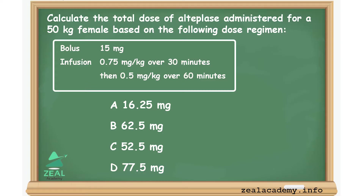A dose refers to a specified amount of medication taken at one time. By contrast, the dosage is the prescribed administration of a specific amount, number, and frequency of doses over a specific period of time.